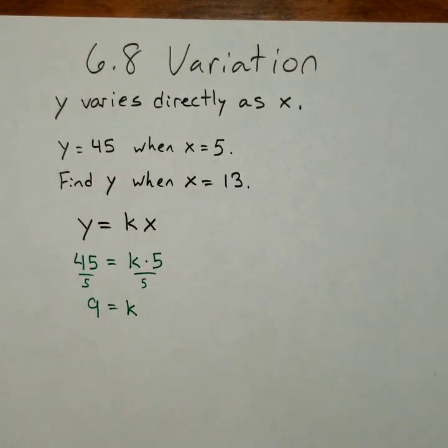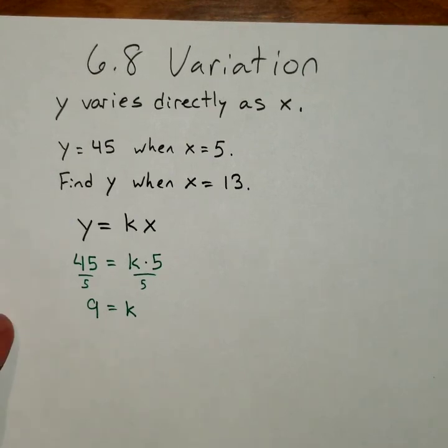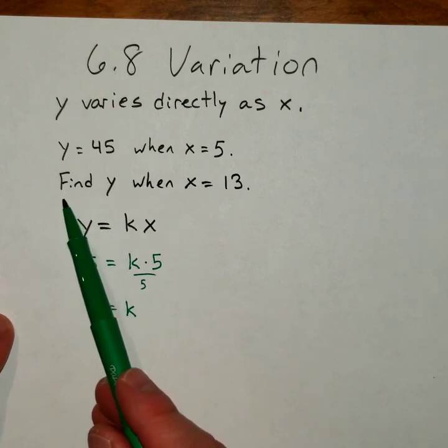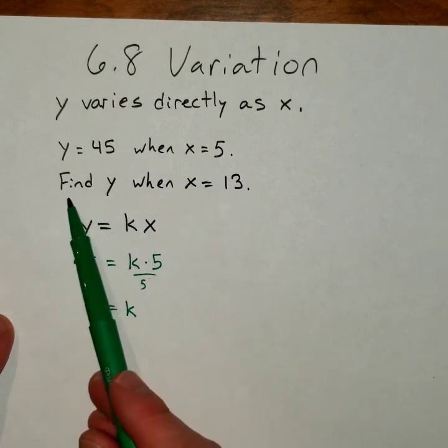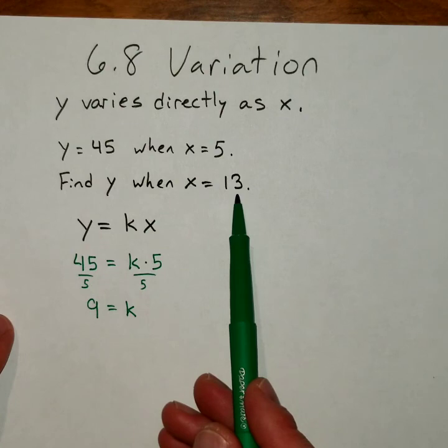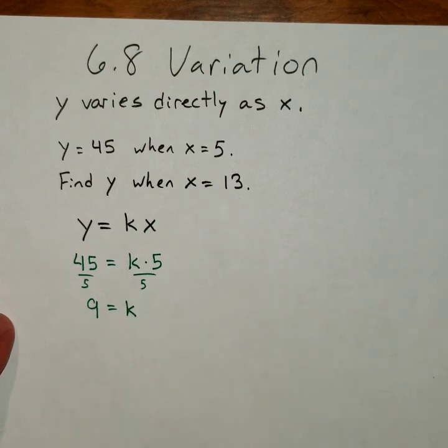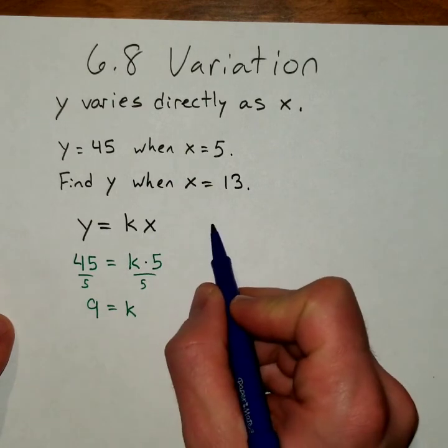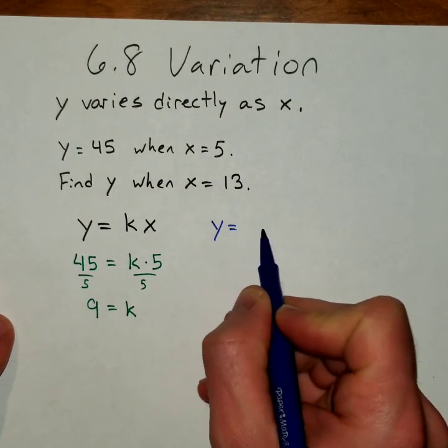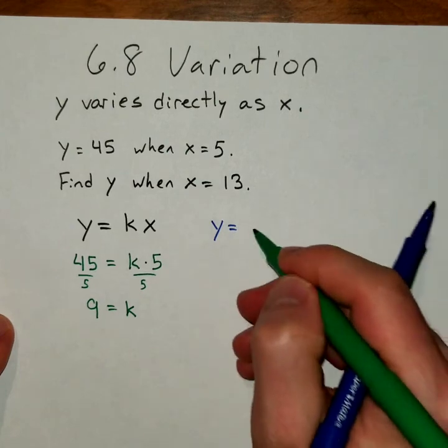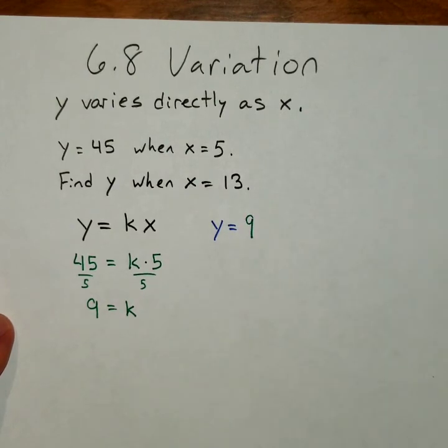All right, so that is our constant, and that's going to stay constant throughout the problem. So now what we're going to do is we're going to jump to the second part of this, or the third sentence. It says find y when x is 13. So we're going to use this 9 as a fixed value and plug it in for k.